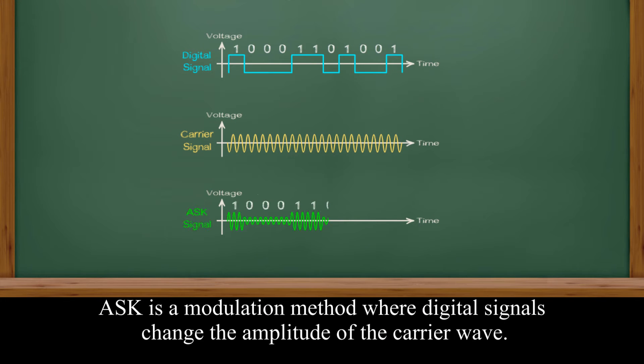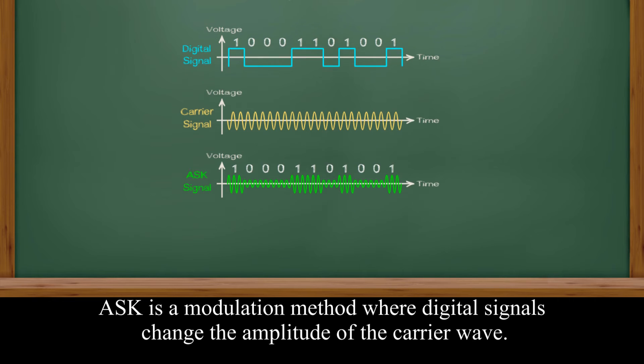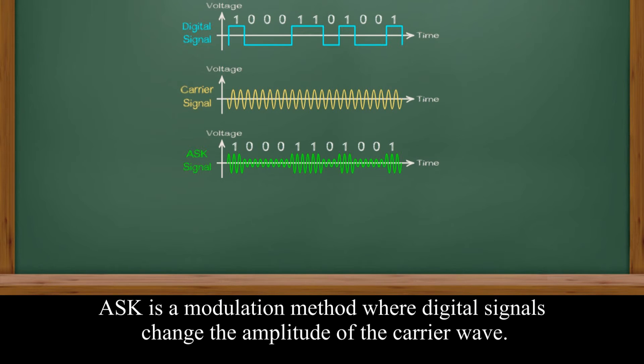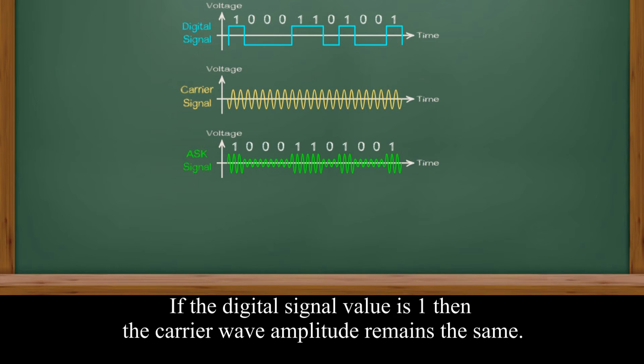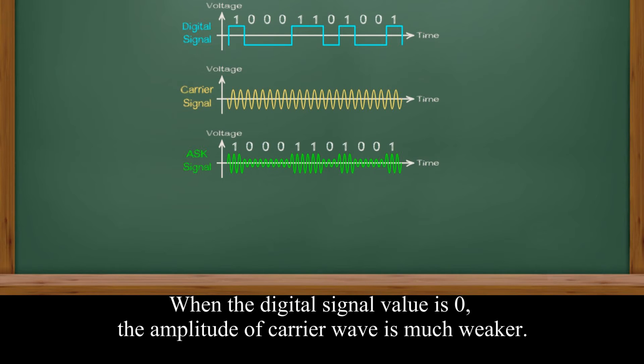ASK is the modulation method where the digital signals change the amplitude of the carrier wave. If the digital signal value is 1, then the carrier wave amplitude remains the same. When the digital signal value is 0, the amplitude of the carrier wave is much weaker.